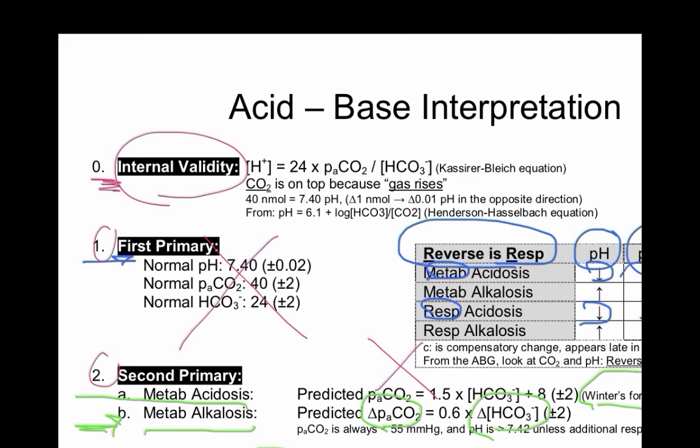Use this equation, the simplified Henderson-Hasselbalch equation: hydrogen ion concentration, normally 40, equals 24 times CO2 divided by bicarb. If there is too much acid, then pH will drop. If there is too little acid, then pH will be higher.